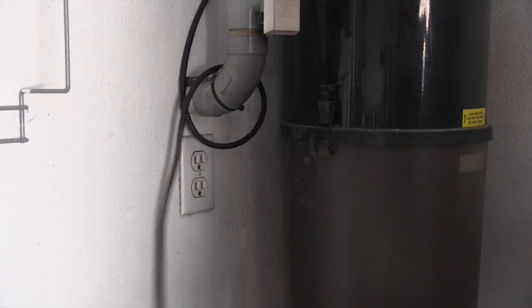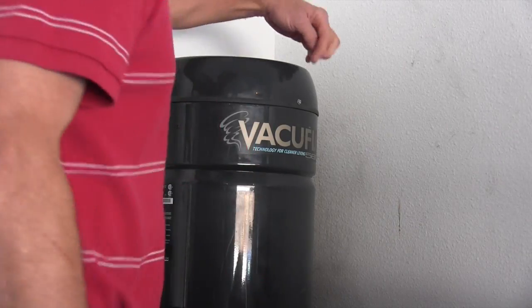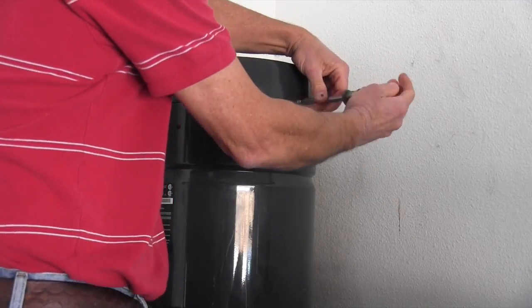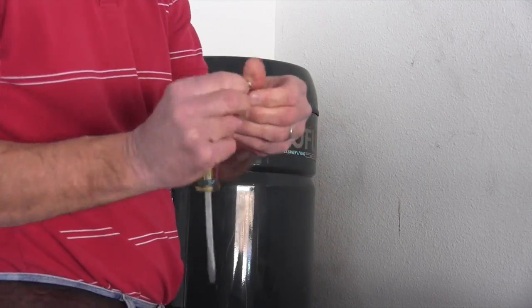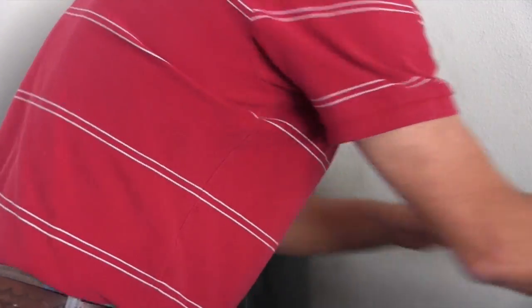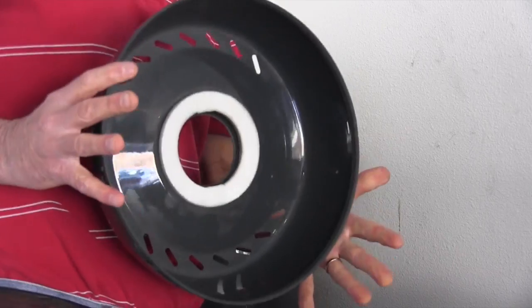First, unplug your vacuum system before you work on it. Now, we need to take the top off, and there's a set screw on top, a really tiny set screw you'll need to take off. Then you can tilt the top back, and there's a clip in the back that holds it on, and you can remove it.